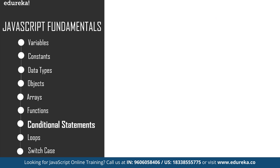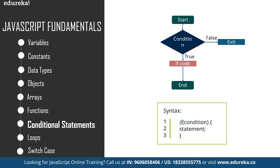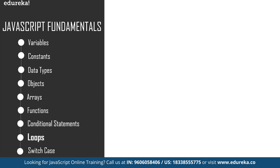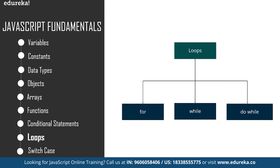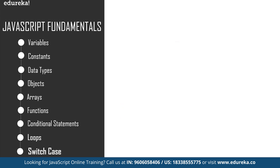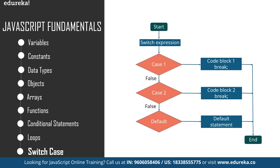For conditional statements, we have the if condition and the else-if condition. A conditional statement is a set of rules performed if a certain condition is met. The if statement executes a block of code only if the specified condition is true, while the else statement executes a block if the condition is false. Loops are used to repeat a specific block until some end condition is met — there are three categories in JavaScript: while loop, do-while loop, and for loop. Finally, the switch statement performs different actions based on different conditions — the switch expression is evaluated once, the value is compared with each case, and if there is a match, the associated block of code is executed.